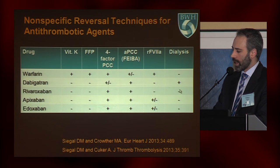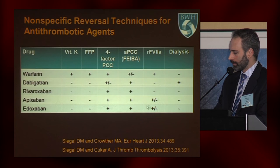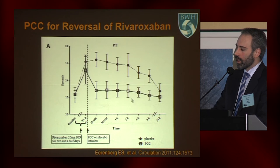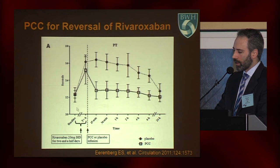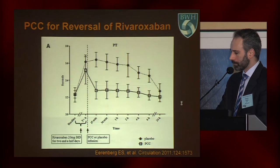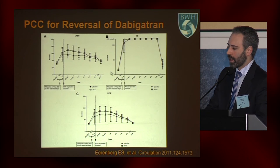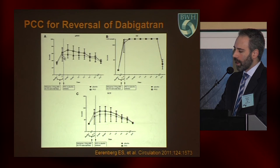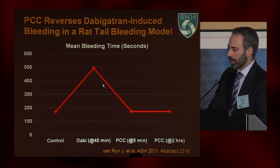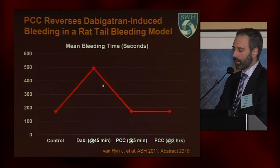Here we can see prothrombin complex concentrate used for reversal of rivaroxaban. A patient given rivaroxaban and then given prothrombin complex concentrate shows the PT coming down promptly with administration of K-Centra. For dabigatran, a different formulation of PCC actually has little effect. There's an alternative form of PCC called FEIBA that you can use for dabigatran, but now that's really unnecessary because we have a reversal agent.